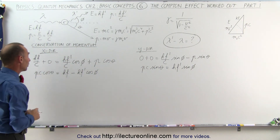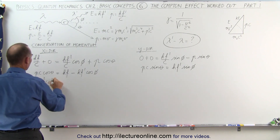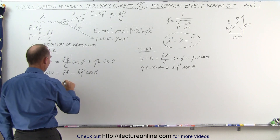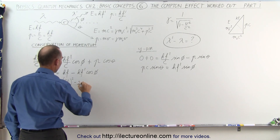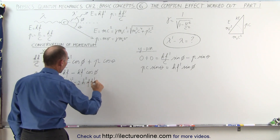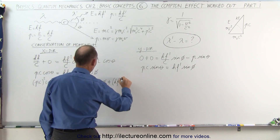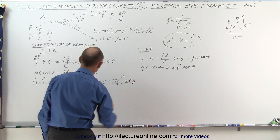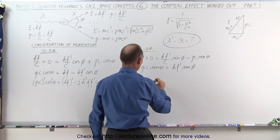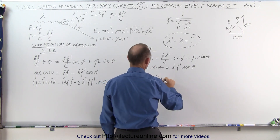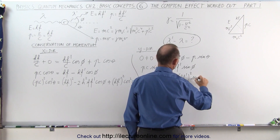Now we square both sides of each equation. Squaring the first gives (pc)² times cosine²θ equals (hf)² minus 2h²ff′ cosφ plus (hf′)² cosine²φ. Squaring the second gives (pc)² times sine²θ equals (hf′)² times sine²φ.